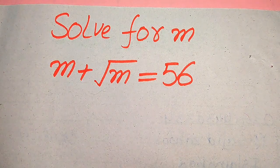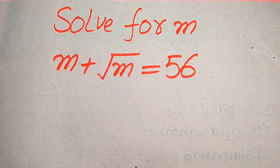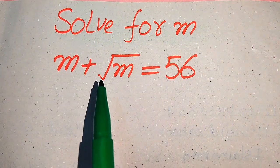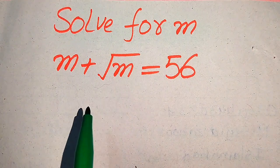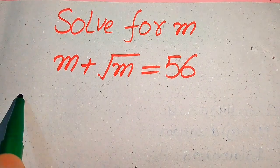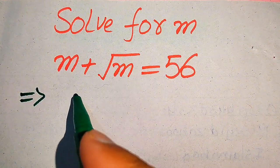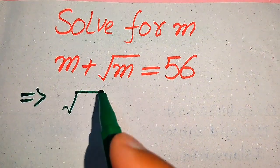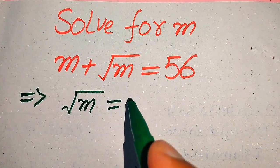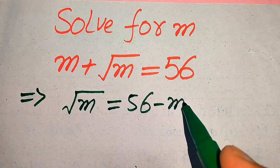Our first target is to find the values of m. First we find the domain in which the solution of this equation lies. Here we need to move this m to the right hand side, and it will be written as square root of m is equals to 56 minus m.